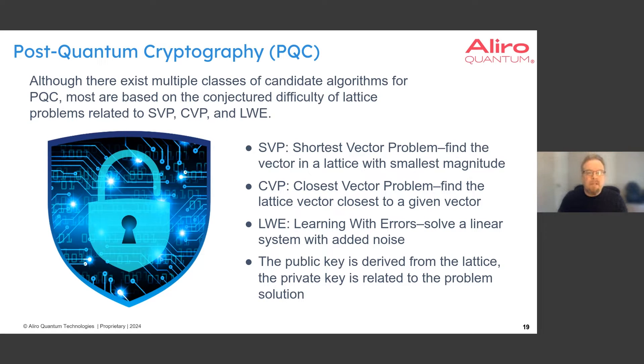Some of the ones that you'll see when reading about this are called the shortest vector problem, the closest vector problem, and learning with errors. We'll show examples of these in just a moment. With lattice-based problems, the public key is derived from the definition of the lattice. The private key is related to the problem solution.